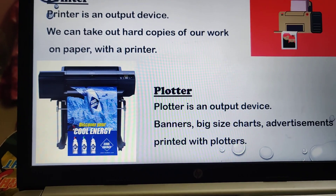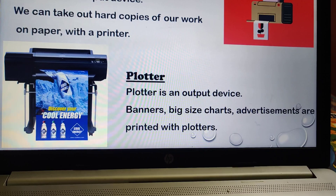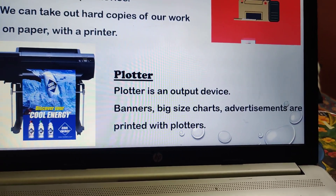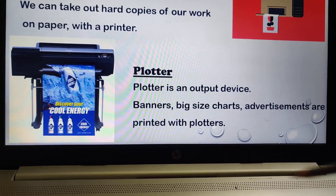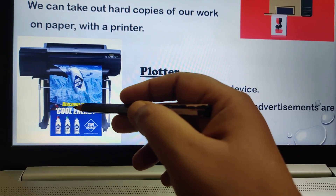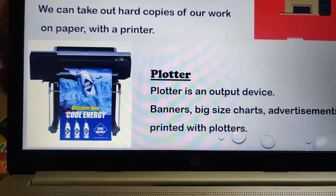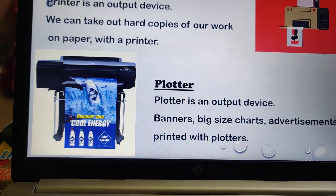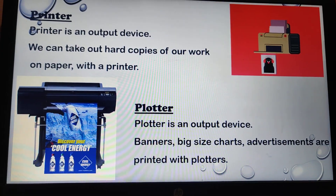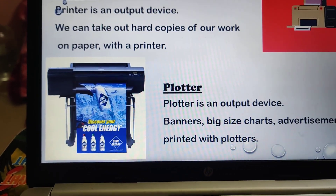Plotter is an output device. Banners, big-size charts, and advertisements are printed with plotters. Children, when you go to the market, you can see different advertisements on big-size paper — those are printed with a plotter. A printer can only print small sizes of pictures, not big posters. For large format printing, we use a plotter.